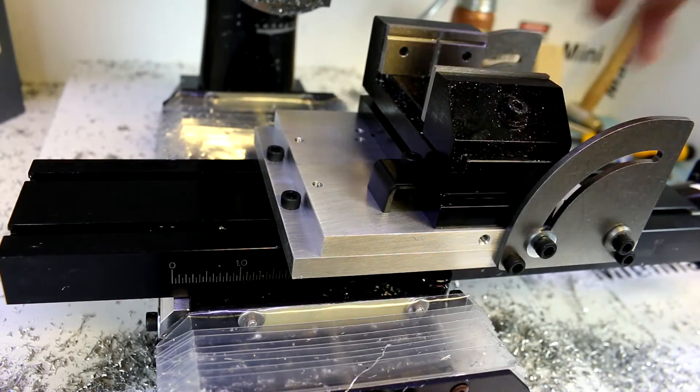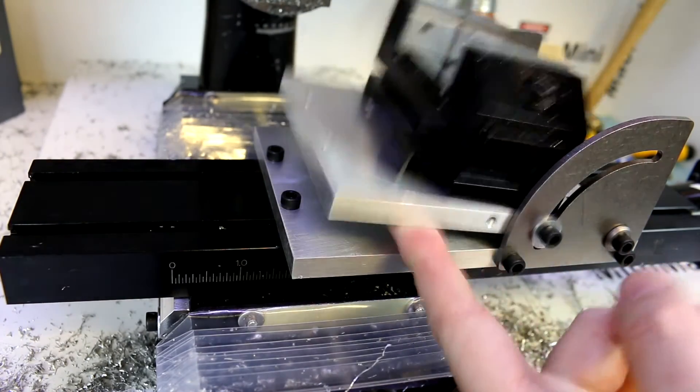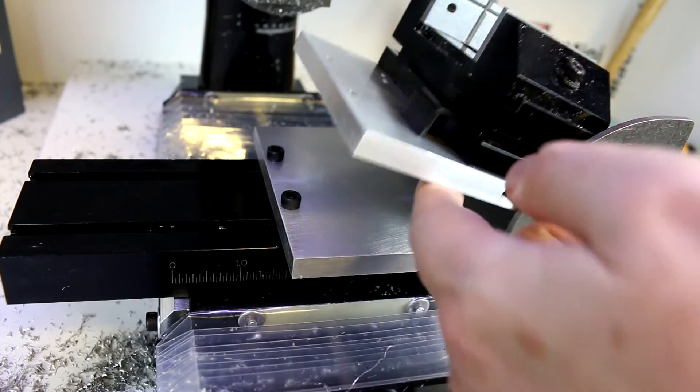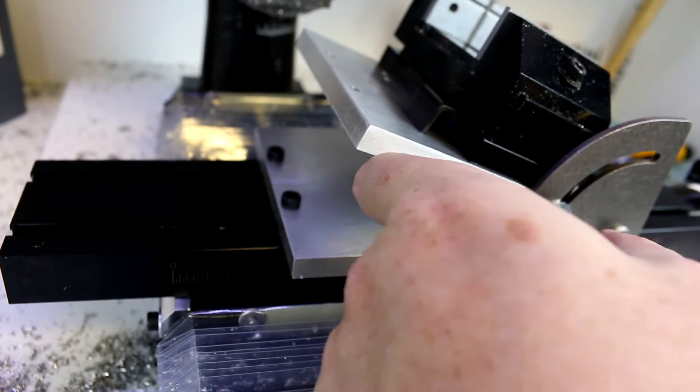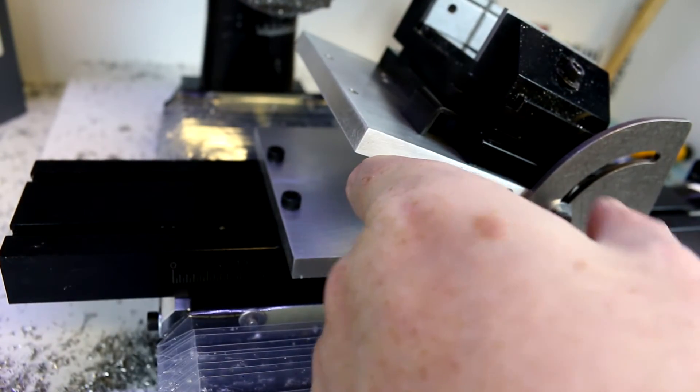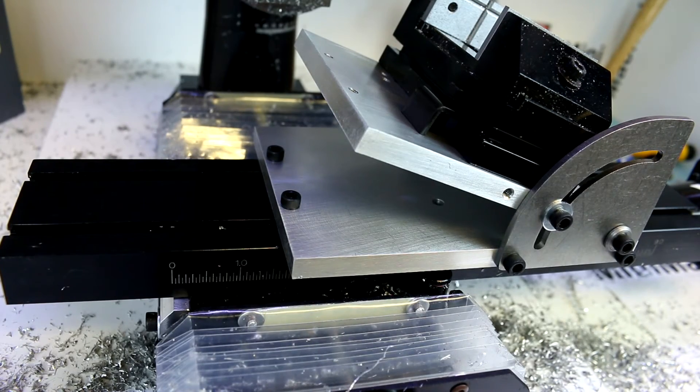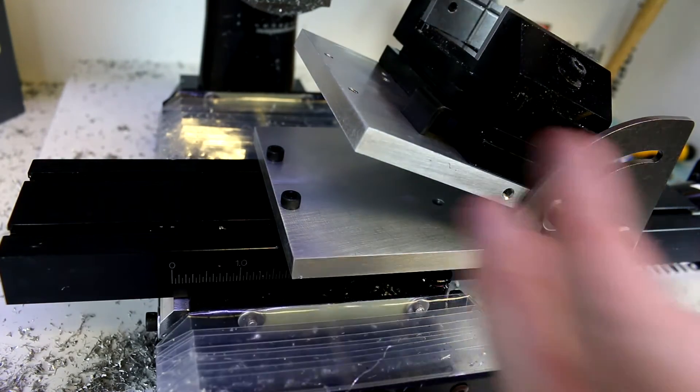Now there are screws on either side that will allow us to raise and tilt the table as so. On the other side there is a scale, although for a lot of things you're probably going to want to use an external protractor or angle blocks.